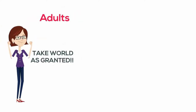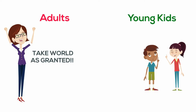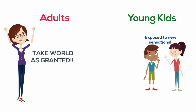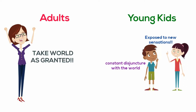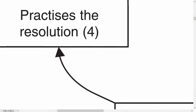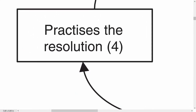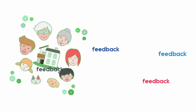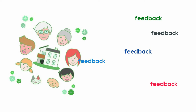Young kids, however, are more often exposed to new sensations — they are in constant disjuncture with the world. When they grow up, they understand the meanings that society gives to their perceptions. We also need to practice and repeat new meanings in order to memorize them. In this process, we get feedback from our surroundings on whether our meaning is socially acceptable. Jarvis acknowledges that we can decide to disagree with the feedback from our environment.